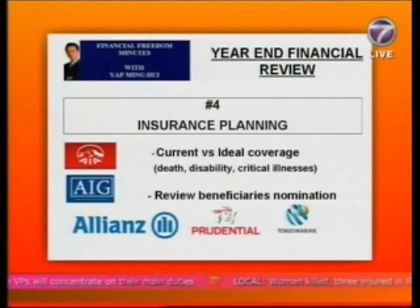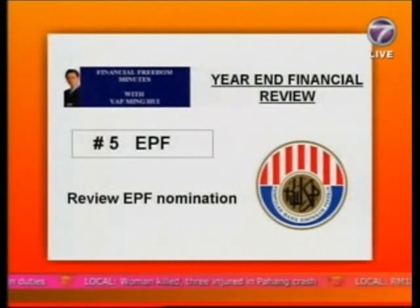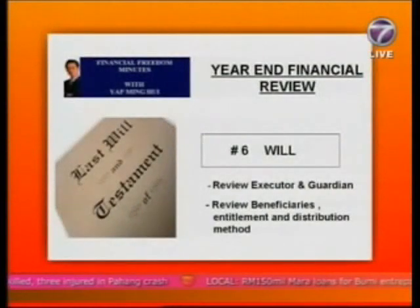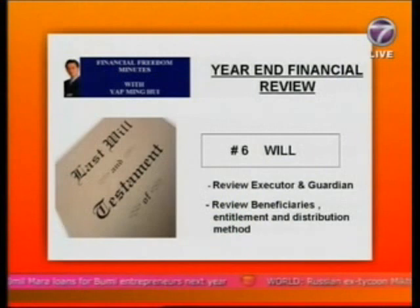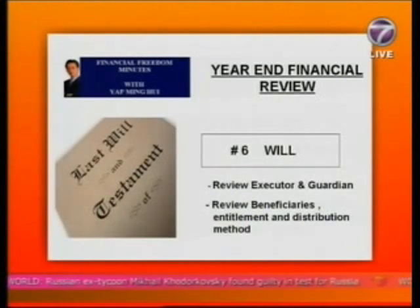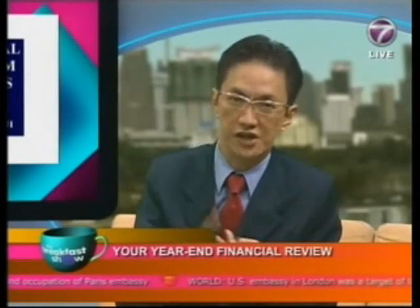The sixth checkpoint is about the will. Check whether the executor or guardian you appointed are still valid — whether they are still alive, healthy, and in a good relationship with you to take care of your children in the event of your absence. Also review the beneficiaries and the percentages — for example, whether you want to give the wife 40% and three children 20% each, or change it so the wife gets 60% and the three children share the remaining 40%.